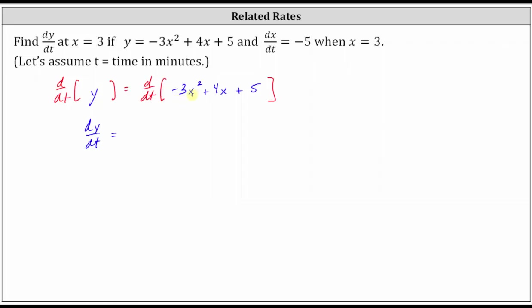which means we first differentiate with respect to x and then multiply by dx/dt. The derivative of negative three x squared with respect to x is negative six x and then applying the chain rule, we multiply by dx/dt.